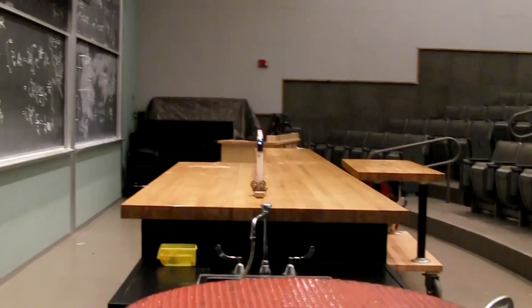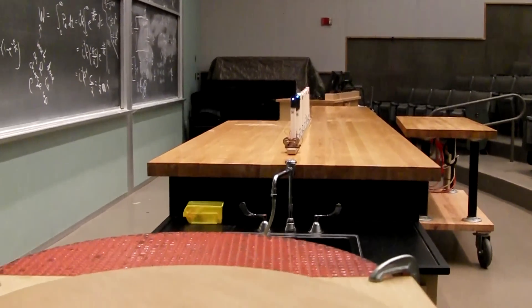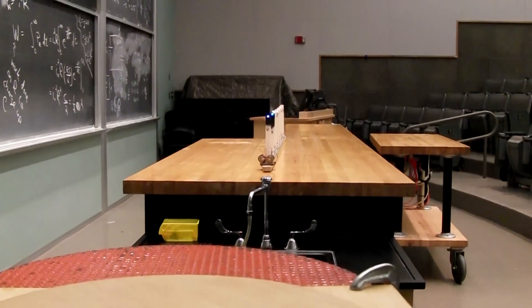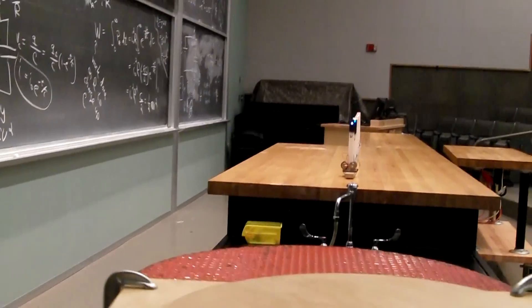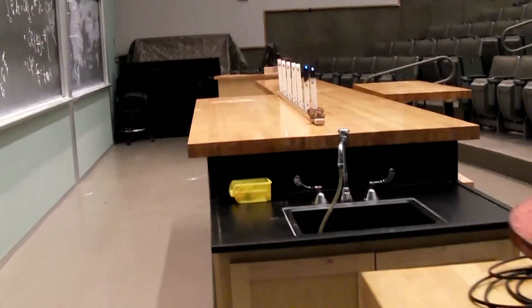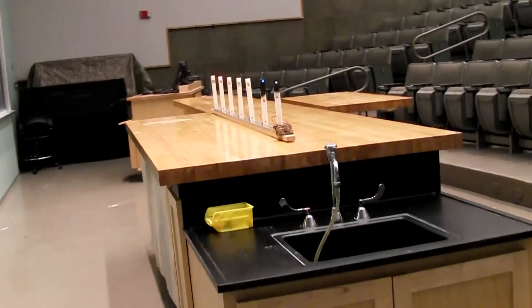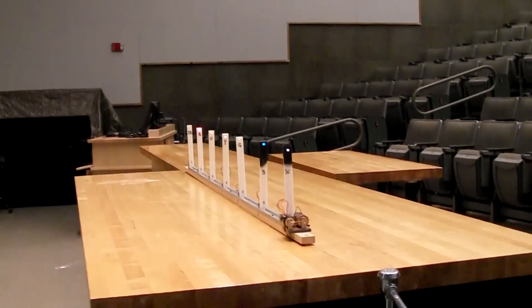Objects that are near have large parallax angles, while objects far away have much smaller parallax angles. So in order to display this idea, we took a series of LED lights.